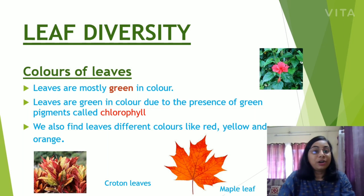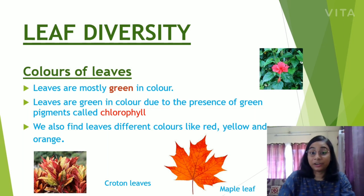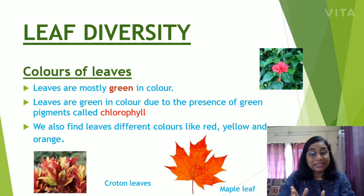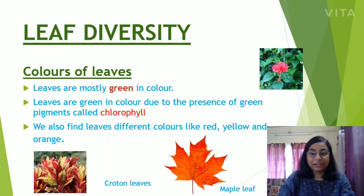Leaves are mostly green in color. They are green due to the presence of a green pigment called chlorophyll. You can see the picture of a leaf which is green in color — it's green due to the presence of chlorophyll.